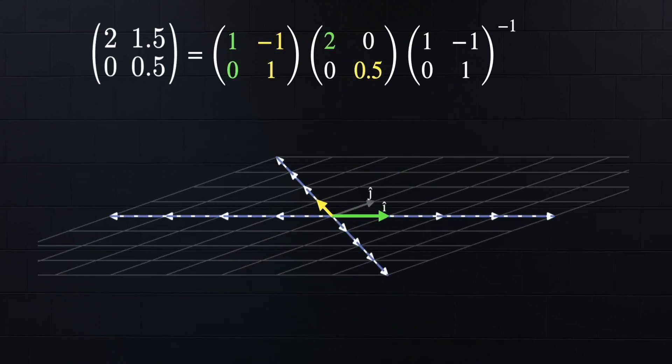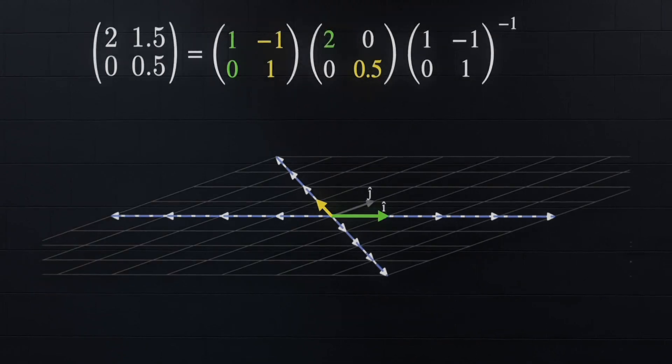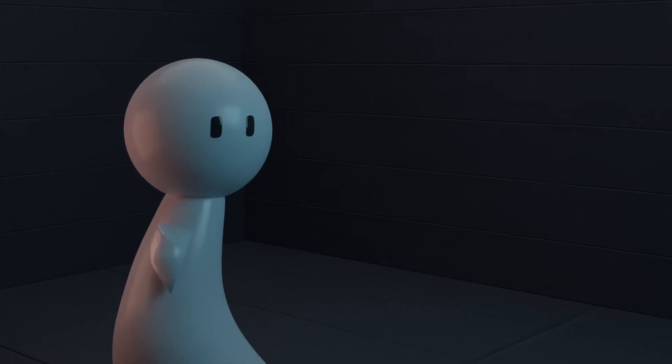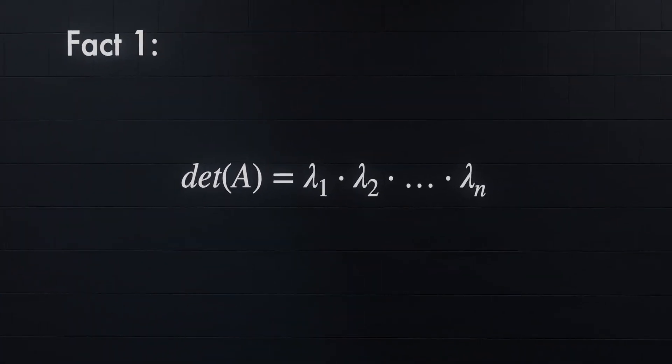As you can see, the eigenvectors and eigenvalues make it much easier for us to determine what a linear transformation looks like. So let's dive into some quick facts to determine the eigenvalues of a matrix. First, the determinant of a matrix equals the product of all its eigenvalues.